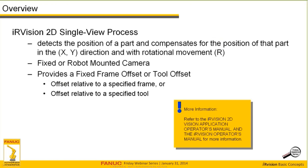The IR Vision 2D single view process detects the position of a part and provides compensation to the robot program for the position of that part in an XY direction and with rotational movement. 2D imaging does not provide a Z axis height, nor does it provide any information on yaw and pitch. We presume when using a 2D single view process that parts are in a planar representation, perpendicular to the camera, and will generally only be in a single plane of reference relative to the camera and the robot frame.